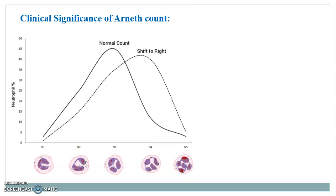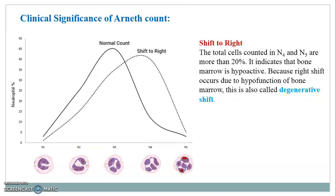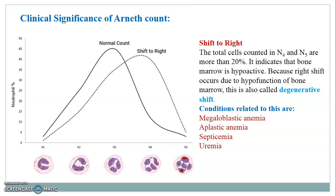A shift to the right occurs when the total cells counted in N4 and N5 stages are more than 20%, indicating that bone marrow is hypoactive. Right shift occurs due to hypofunction of the bone marrow and is also called degenerative shift. Conditions associated with this include megaloblastic anemia, aplastic anemia, septicemia, and uremia. This is the clinical significance of the Arneth Count.